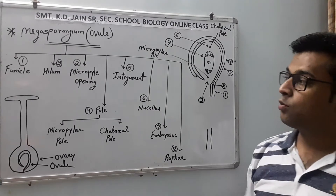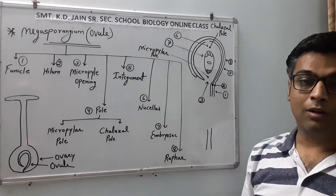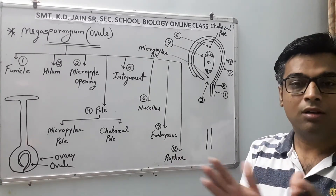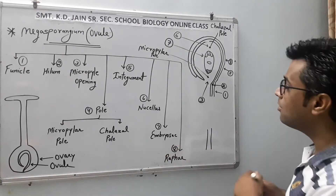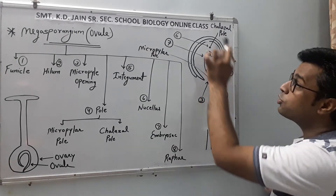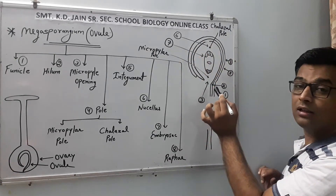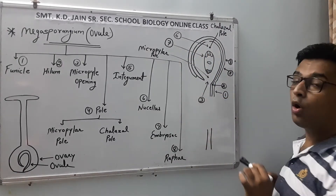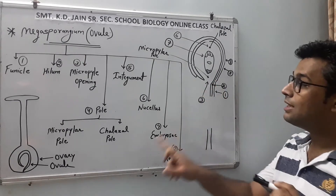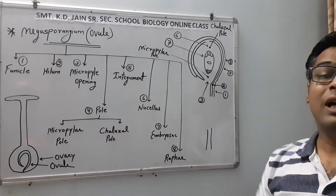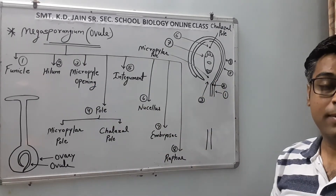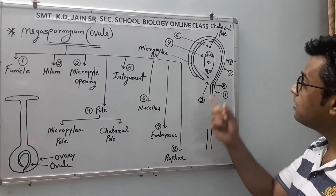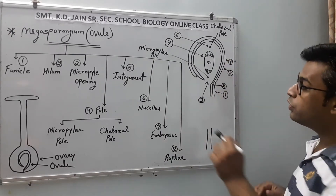Next is the Micropylar opening. Looking at the upper side of the Ovule — it is all packed, but there is a small opening known as the Micropylar opening. You need to know that the pollen tube enters into the Ovule through this opening.